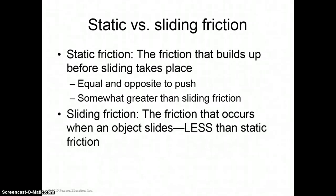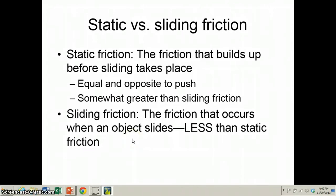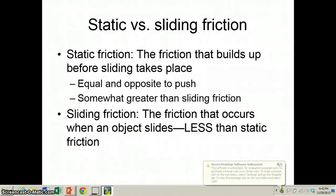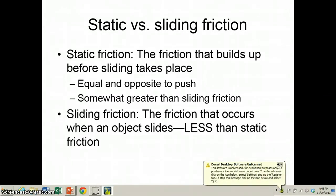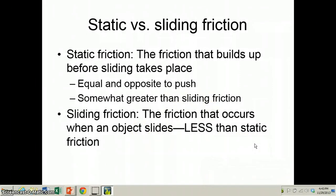Now why is this an important thing? This is the physics behind a skidding car, and it's why you have anti-lock brakes on your car. If your brakes lock up and the tires lock into place, then you have sliding friction between the car and the surface of the road, and sliding friction is less than static friction, so you have less stopping force.